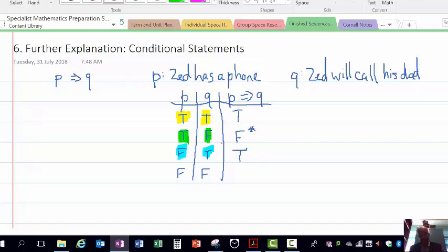The last one needs a little bit of explanation as well. Zed didn't have a phone, Zed did not call his dad. Well, that still gets a value of true because there's been no lies there.